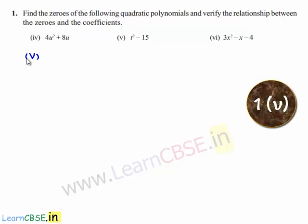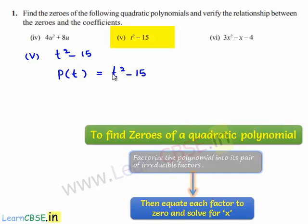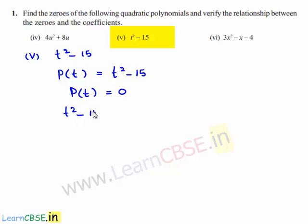Coming to the fifth bit, which is t squared minus 15. The polynomial can be written as P of t is equal to t squared minus 15. In order to find the zeros of the polynomial, let us equate the given polynomial P of t to 0, so this can be written as t squared minus 15 is equal to 0.